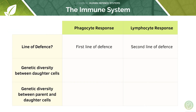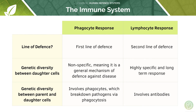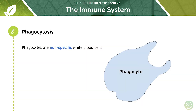Comparing the phagocyte and lymphocyte responses: the phagocyte response forms the first line of the immune defence, whereas the lymphocyte response forms the second. The phagocyte response is non-specific — a phagocyte can engulf an HIV virus and also an influenza virus — whereas a lymphocyte response has to produce two different types of antibody to fight against either HIV or influenza. So phagocytes are your non-specific white blood cell, whereas lymphocytes are your specific white blood cell.